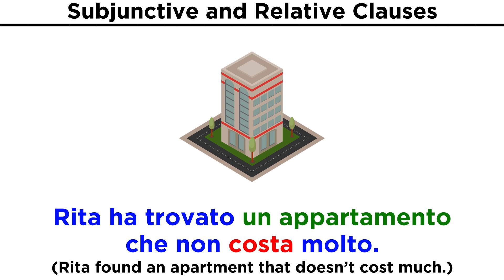But things will change when the antecedent is a person or thing that does not necessarily exist, but rather is desired or hoped to exist. In this case, not surprisingly, based on what we've learned recently, the mood will switch from indicative to subjunctive. Let's look at the same sentence in a slightly different way.